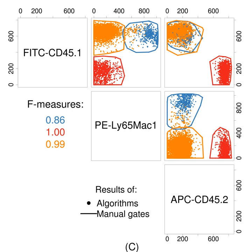ISAC is considering replacing FCS with a flow cytometry-specific version of the Network Common Data Form file format. NETCDF is a set of freely available software libraries and machine-independent data formats that support the creation, access, and sharing of array-oriented scientific data. In 2008, ISAC drafted the first version of NETCDF conventions for storage of raw flow cytometry data.